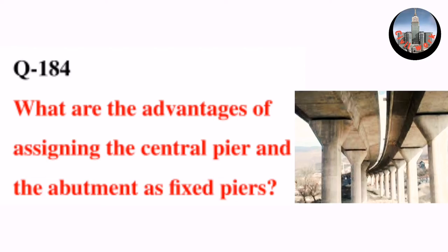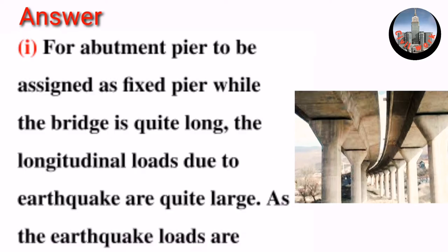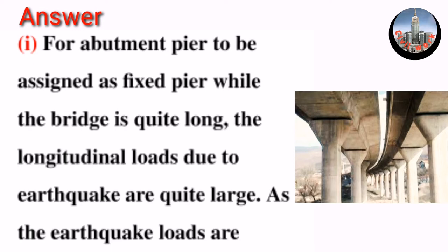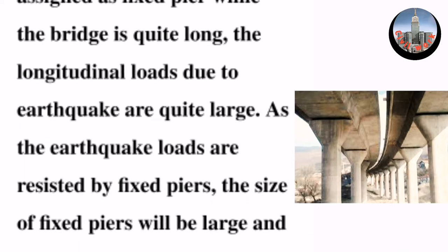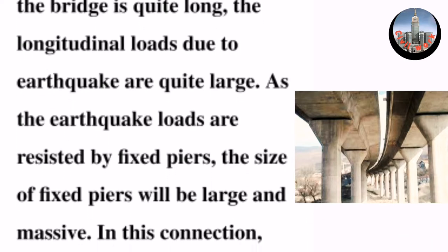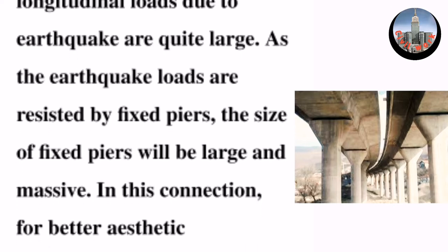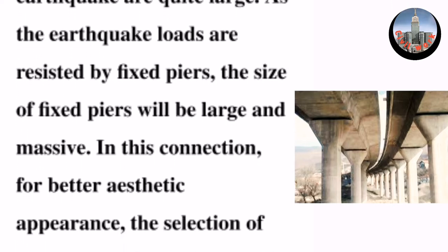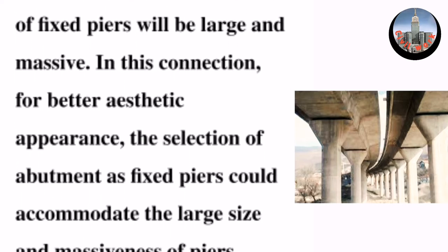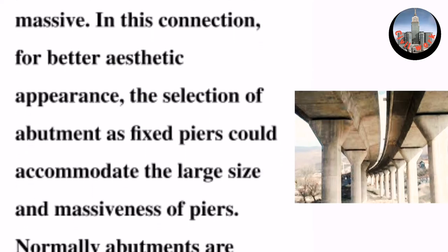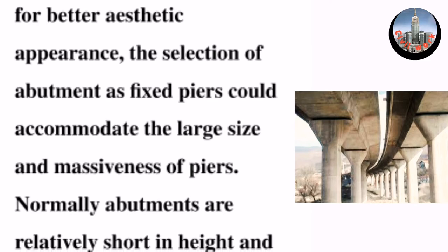Question number 184: What are the advantages of assigning the central pier and the abutment as fixed piers? For abutment piers to be assigned as fixed piers, while the bridge is quite long, the longitudinal loads due to earthquake are quite large. As the earthquake loads are resisted by fixed piers, the size of fixed piers will be large and massive. For better aesthetic appearance, the selection of abutment as fixed piers could accommodate the large size and massiveness of piers.